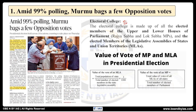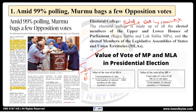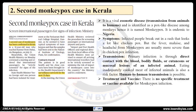The electoral college includes the elected members of both Houses of Parliament and elected members of the State Legislative Assemblies. Please remember, nominated members are not included. The value of the vote of MPs and MLAs was covered yesterday, so we are moving further. If this topic repeats, the functions and roles of the president will be covered in coming lectures.